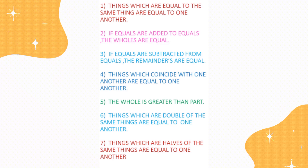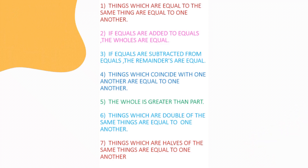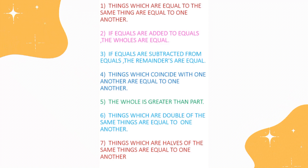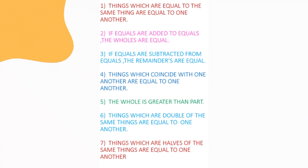4. Things which coincide with one another are equal to one another. 5. The whole is greater than the part. 6. Things which are double of the same thing are equal to one another. 7. Things which are half of the same thing are equal to one another.